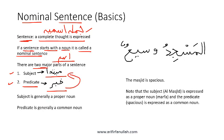A nominal sentence or Jumlah Ismiyya is created such that the subject is generally expressed as a proper noun, whereas the Khabar or predicate is generally expressed as a common noun.